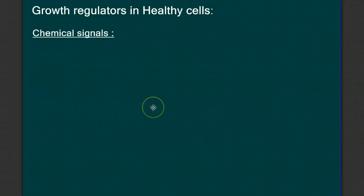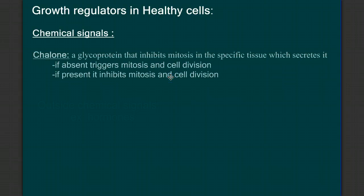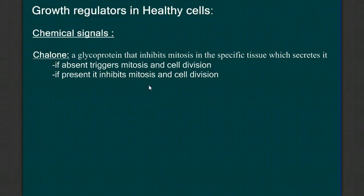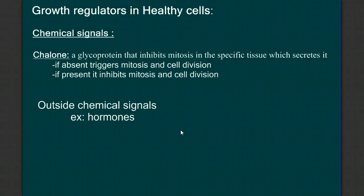Another type of growth regulator involves chemical signals. I'm going to highlight one briefly here — a molecule called chalone. This is a glycoprotein produced by the cell itself, and it will inhibit mitosis in those cells. So it's a chemical that, if absent, will trigger mitosis and cell division, but if it's present, mitosis and cell division are inhibited. There are also outside chemical signals that can stimulate growth of cells, like hormones.